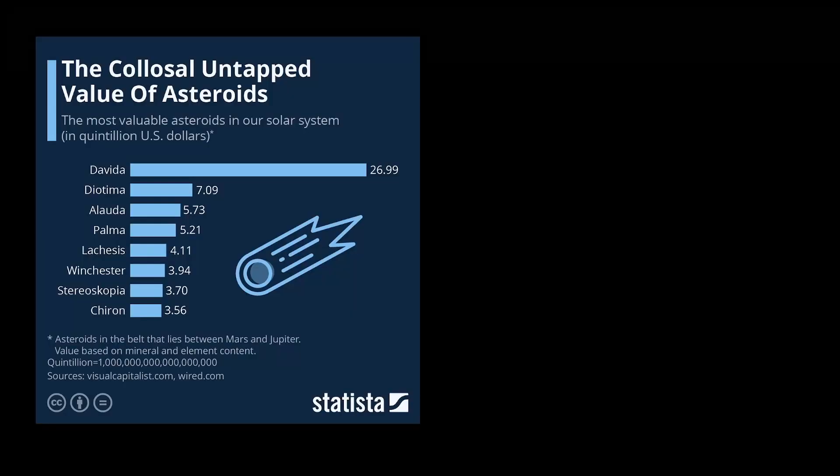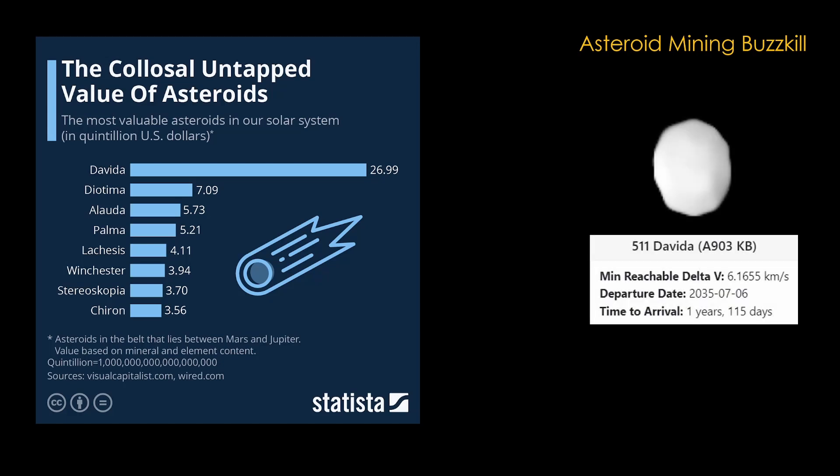Here's another application of the rocket equation. Let's look at an asteroid rendezvous mission. The internet says that the asteroid DaVita is worth about 27 quintillion US dollars. If you want to learn why that's not even close to true, see my video, Asteroid Mining Buzzkill, but we'll pretend that we want to do this mission and understand what sort of spacecraft we need to design. 511 DaVita requires 6.17 km per second of delta-V to get to, assuming we depart in July of 2035. Timing is very important when we are trying to journey beyond the moon. That is why missions to Mars launch every 26 months or so, when the delta-V cost is the lowest.